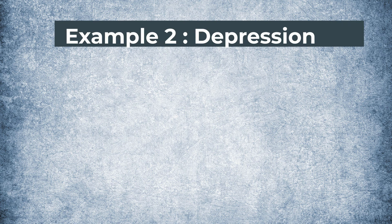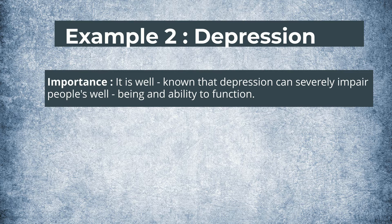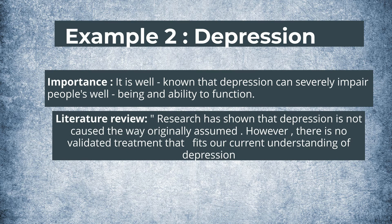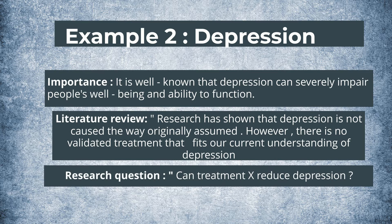Let's take depression as a research topic. A researcher may argue for the importance of this topic by saying it is well known that depression can severely impair people's well-being and ability to function. Then, as part of a literature review, the researcher may argue the question is also novel and timely — for example, by saying research has shown that depression does not occur the way originally assumed. However, there is no validated treatment that fits our current understanding of depression. The research question could be: can treatment X reduce depression? — where treatment X follows our novel and current understanding of depression, making this an important, novel, and timely question.